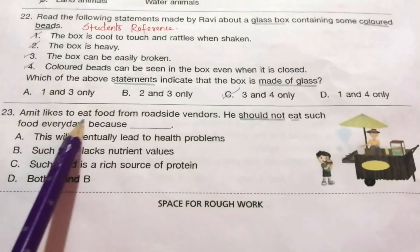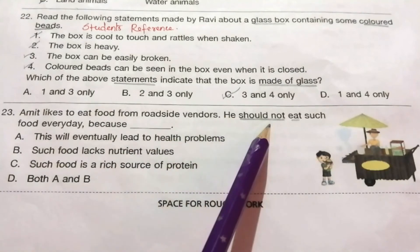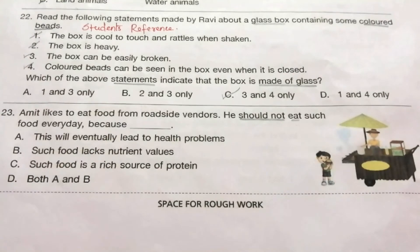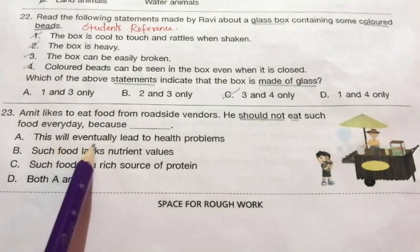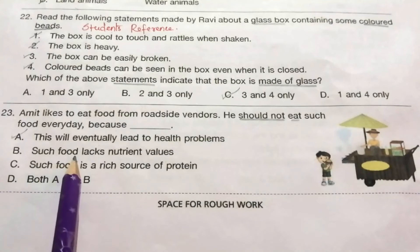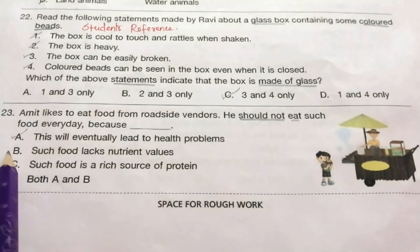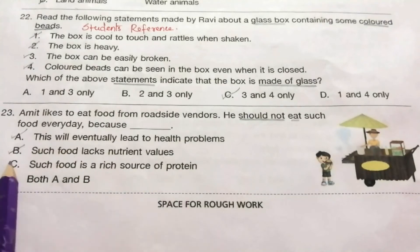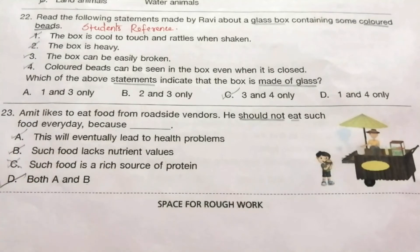Question 23: Amit likes to eat food from roadside vendors. He should not eat such food every day because — this will eventually lead to health problems (correct), such food lacks nutritional value (correct), such food is a rich source of protein (wrong). Both A and B are correct, so the answer is D.